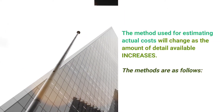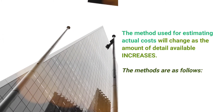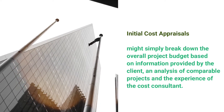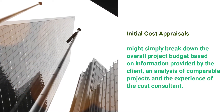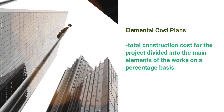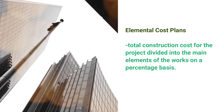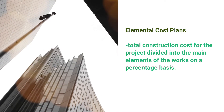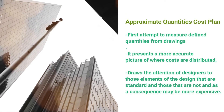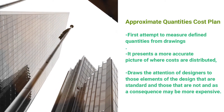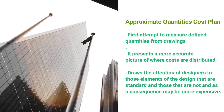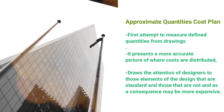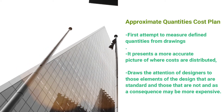The method used for estimating actual cost will change as the amount of detail available increases. Initial cost appraisals might simply break down the overall project budget based on information provided by the client and an analysis of comparable projects in the experience of the cost consultant. An elemental cost plan may simply be the total construction cost for the project divided into the main elements of the works on a percentage basis. The approximate quantities cost plan is a first attempt to measure defined quantities from drawings. It presents a more accurate picture of where costs are distributed — in particular, it draws the attention of designers to those elements of the design that are standard and those that are not, and as a consequence may be more expensive.